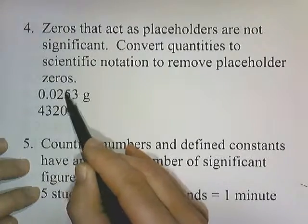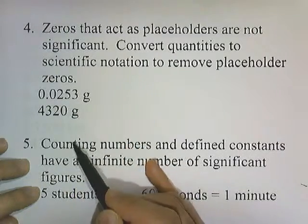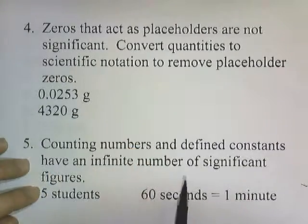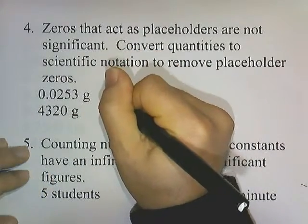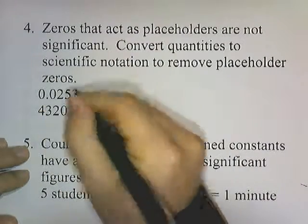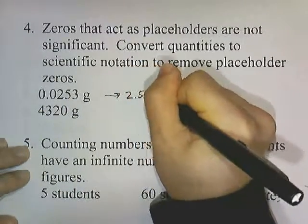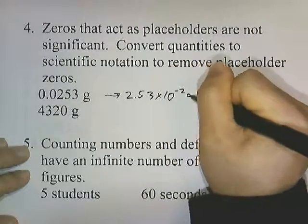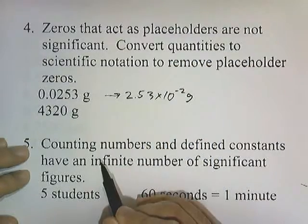So that means we only have three significant digits here, and three significant digits here. To write it in scientific notation, we would write it as 2.53 times ten to the negative two grams, and you can clearly see it's three significant digits there.